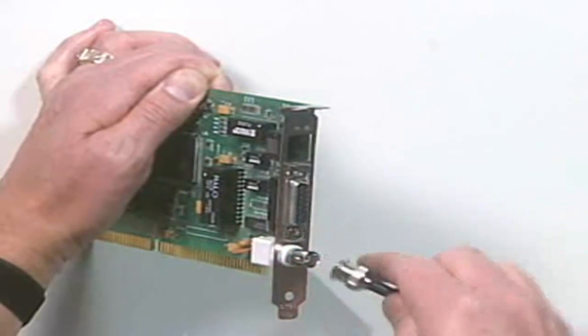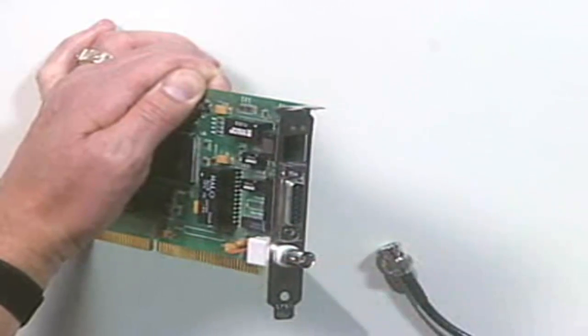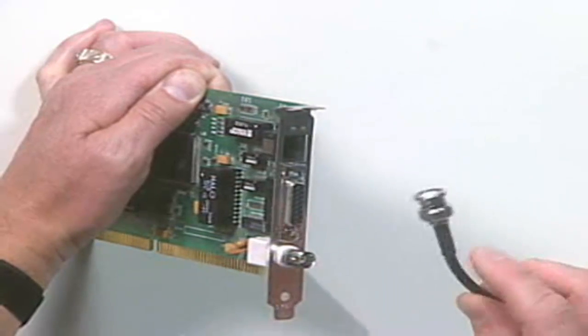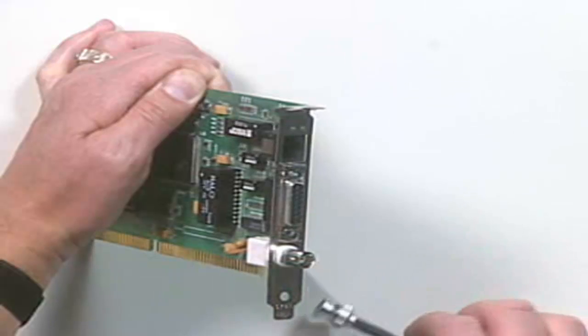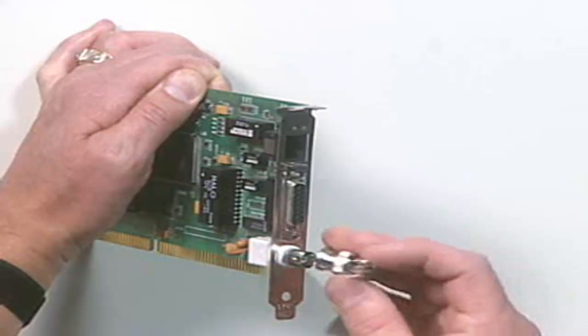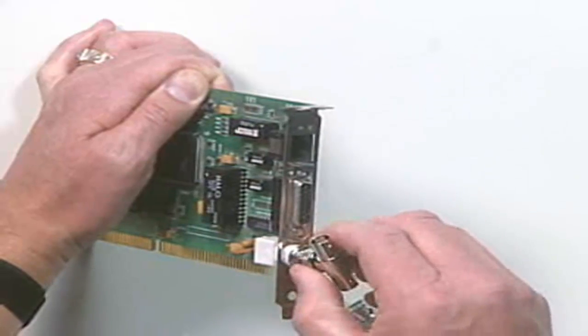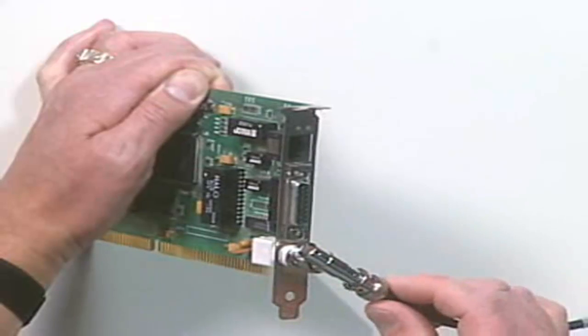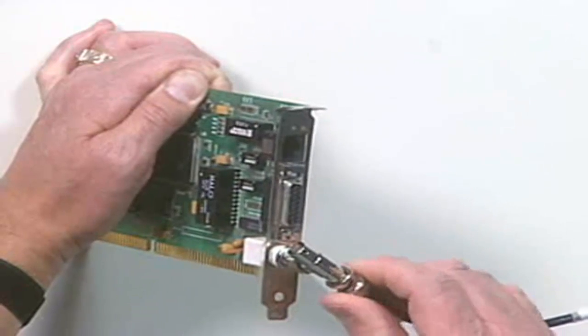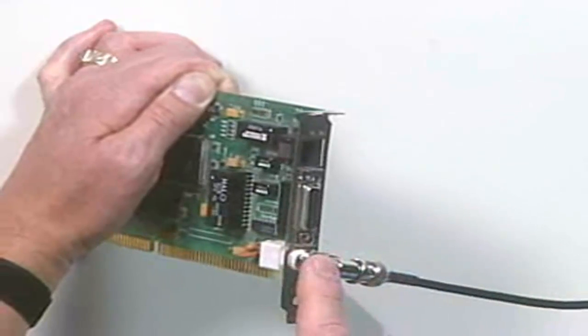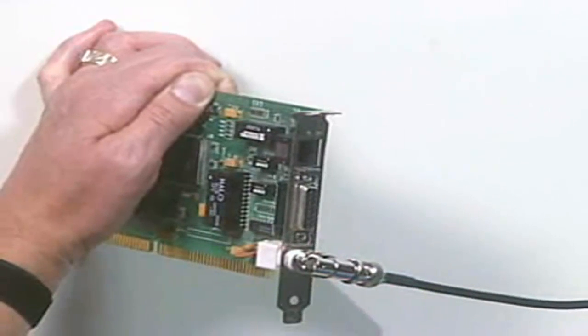10-base-2 uses a physical and a logical bus topology. That means this same cable runs from machine to machine to machine. To do that, we have to use this device right here. It's called a T-connector. This is the part that actually connects to the network interface card. Then, we connect the coaxial cable to it. And from this point, we could attach another cable right here and run it on to the next computer.